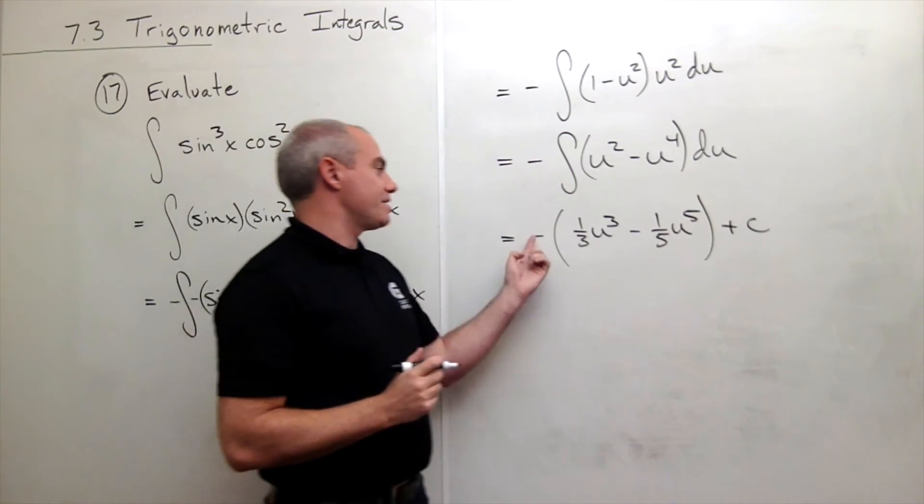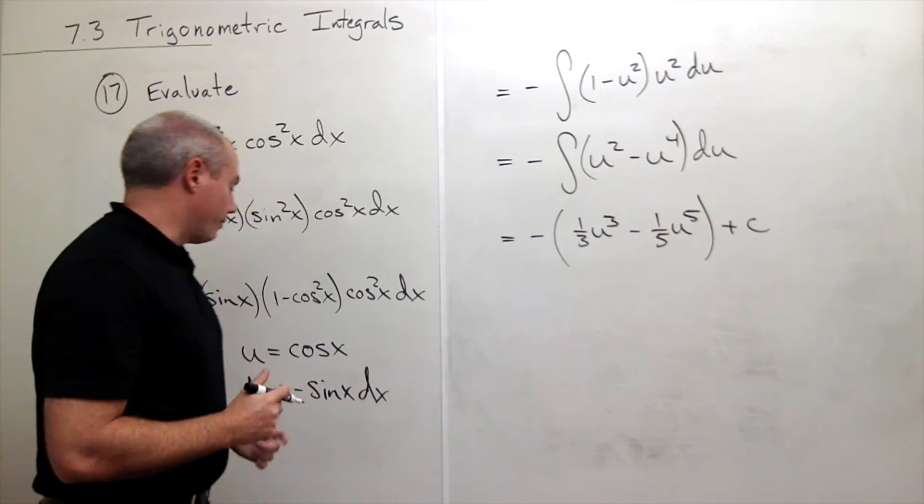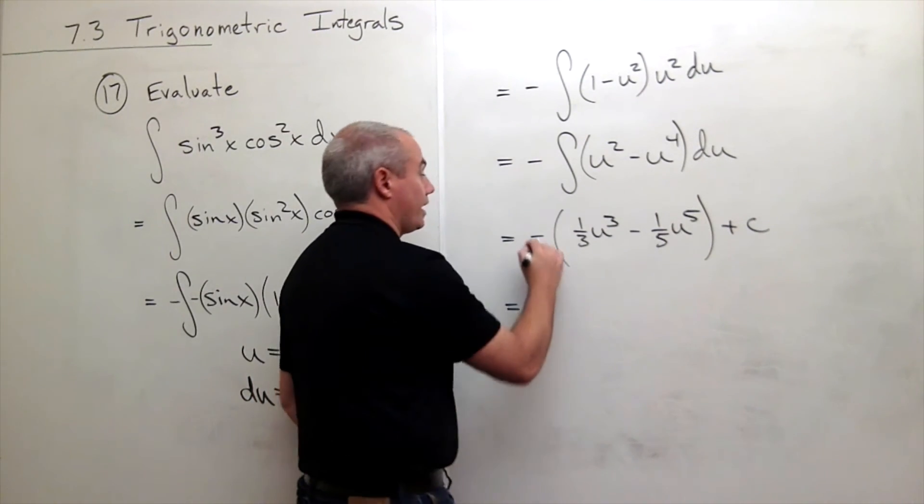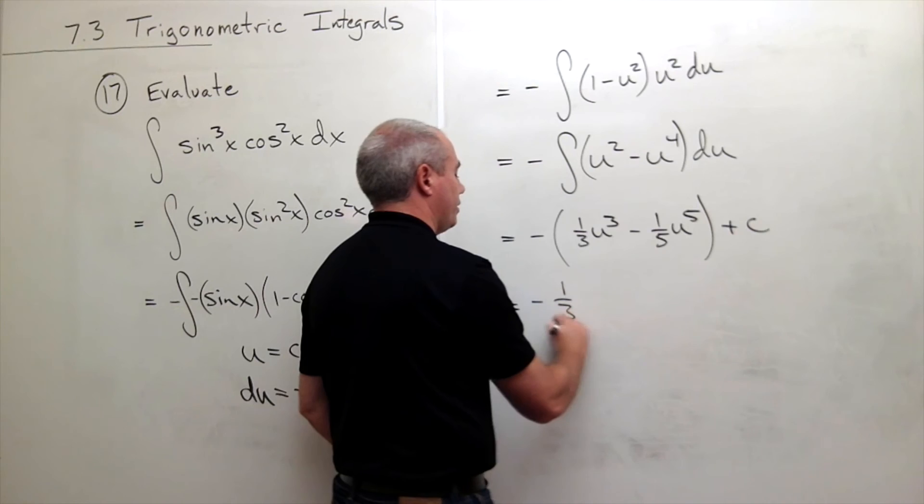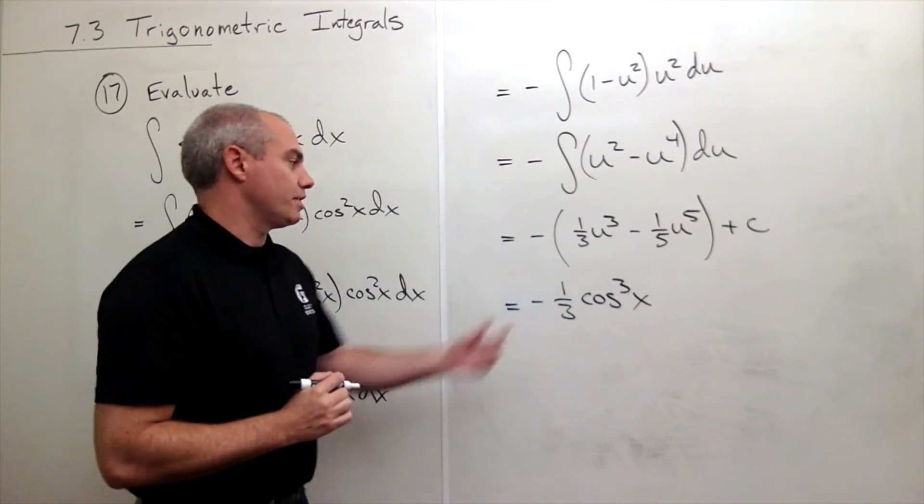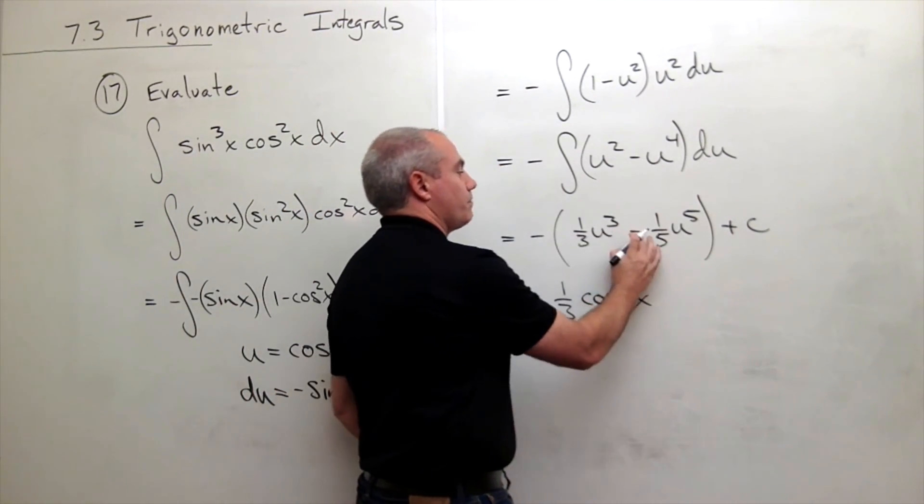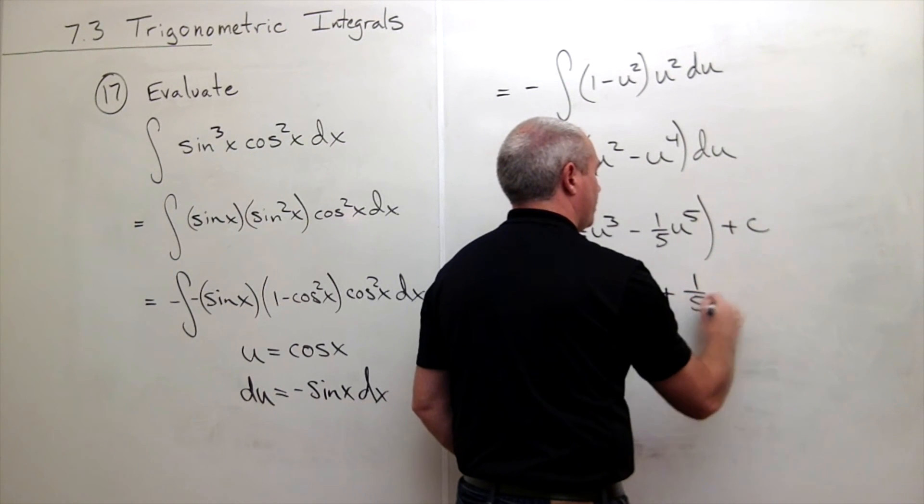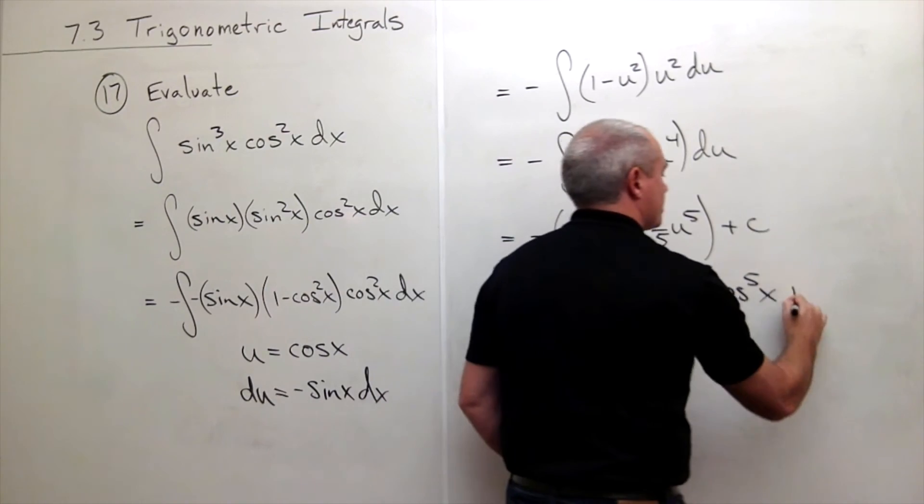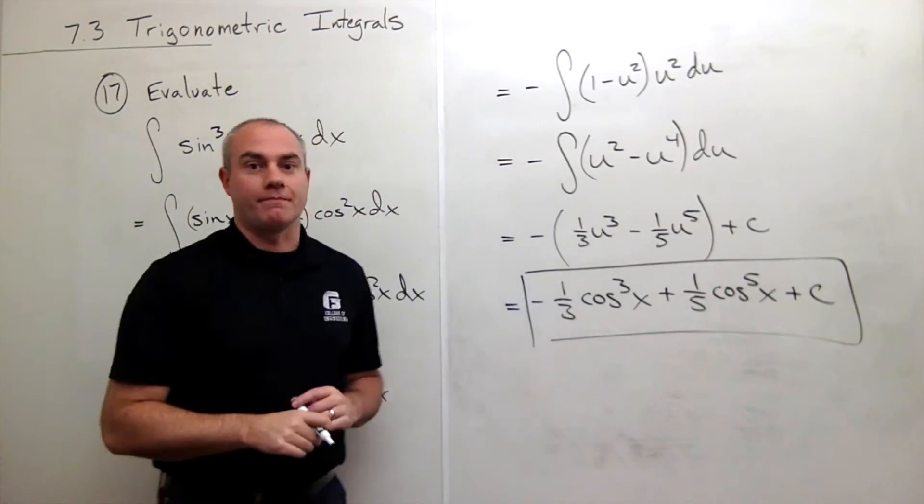Now we can multiply through by this negative and also we can plug back in for u. Remember u was cosine of x. So I get minus one-third cosine cubed of x, and then minus times minus is plus one-fifth cosine to the fifth of x plus our constant c. And we are done.